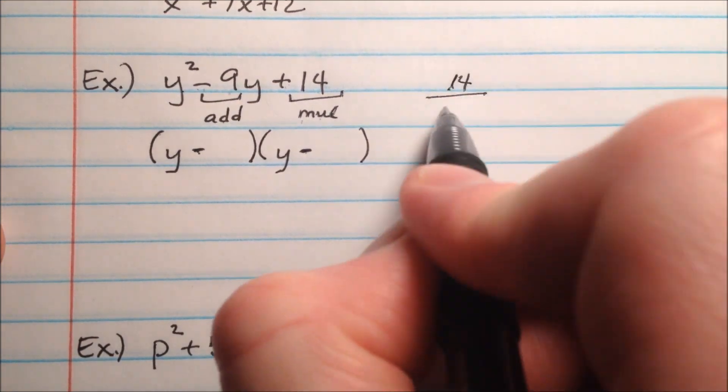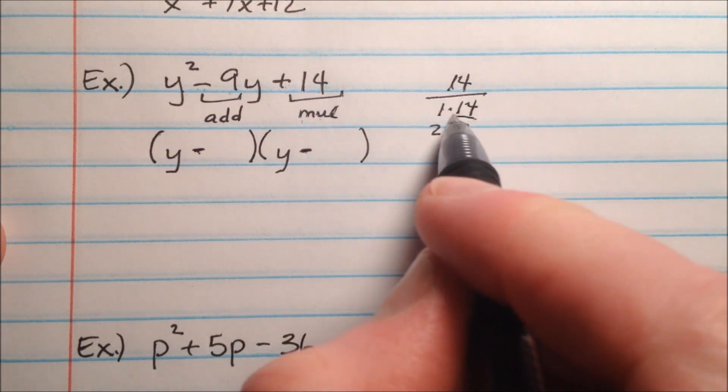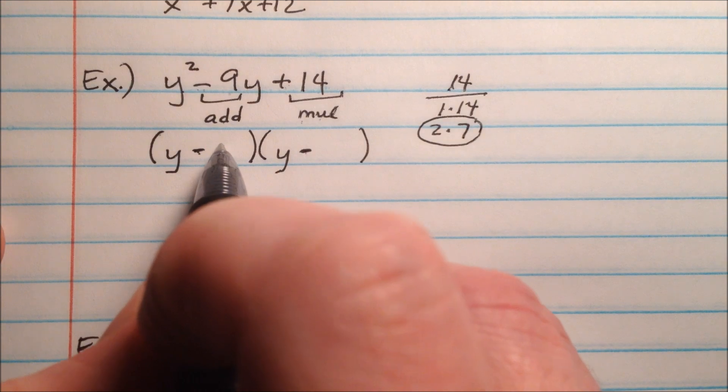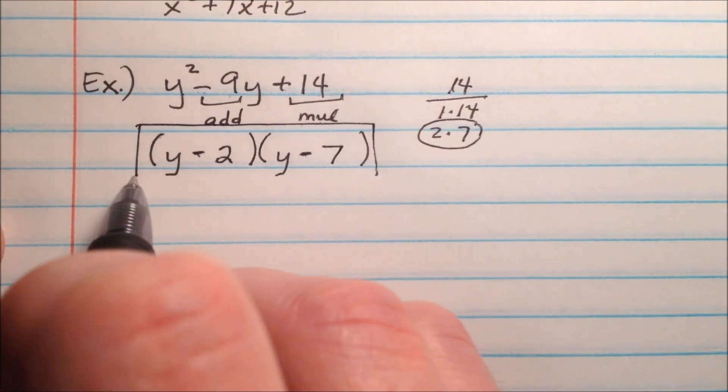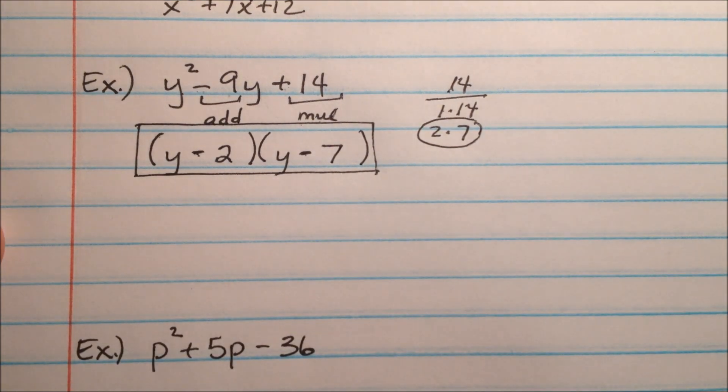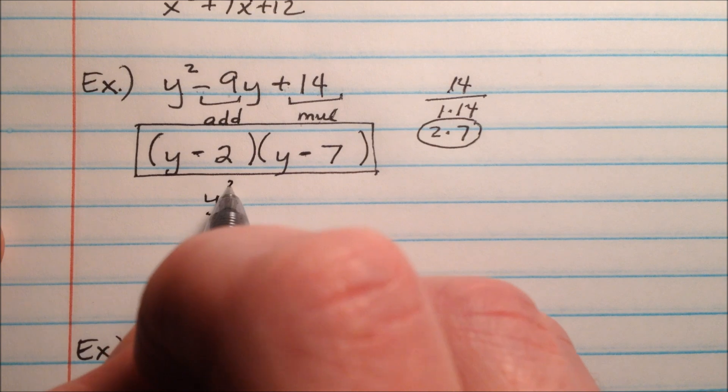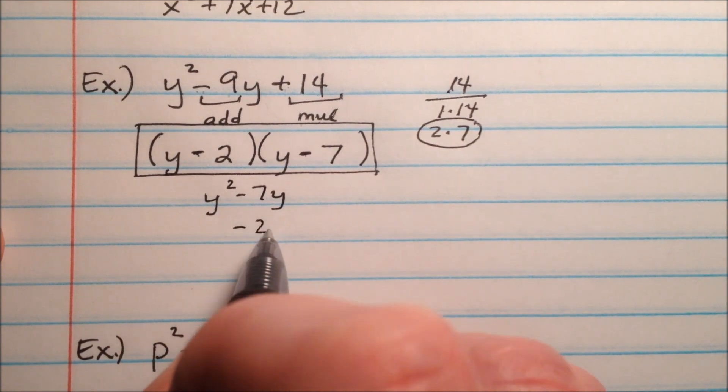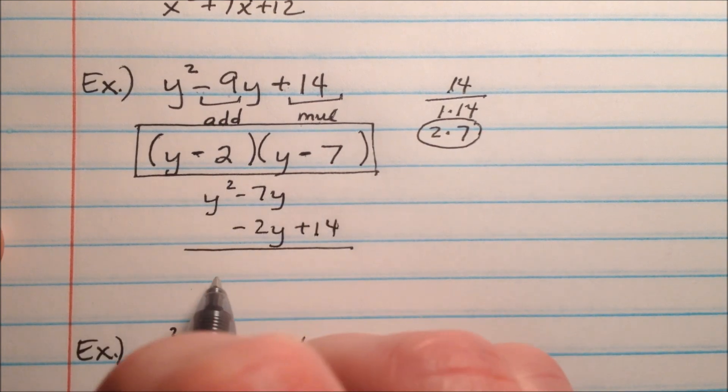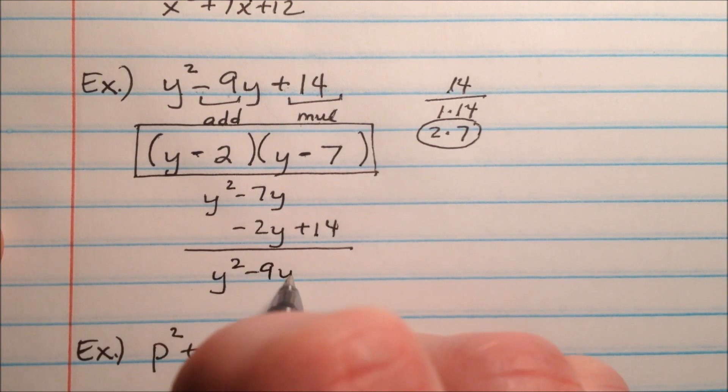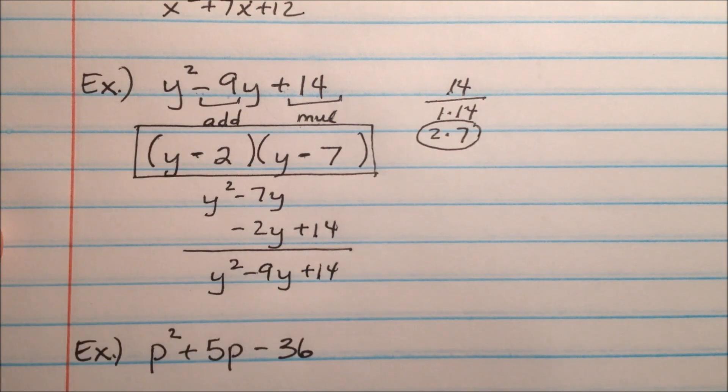So what are the factors of 14 that will make 9? Well, 14 is going to be 1 times 14, or 2 times 7, and it looks like this 2 and the 7 will go and make 9. So it will be a negative 2 and a negative 7, and that's what this will look like when we factor it. And again, we can FOIL it back out to verify. So we get y squared minus 7y minus 2y and then plus 14, and we multiply those, the negative 2 and the negative 7. And we get y squared minus 9y plus 14, which is indeed what we began with.